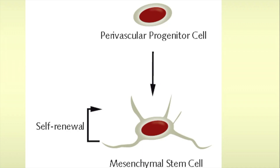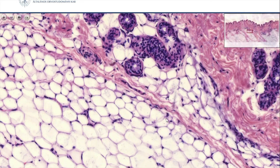Mesenchymal stem cell — I can only show it to you on a sketch. And fat cells — we've seen them before in many other tissues.